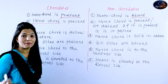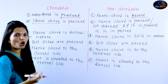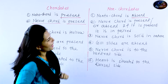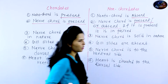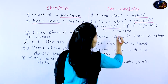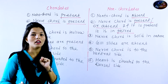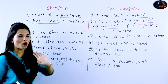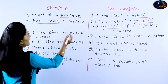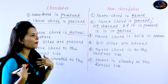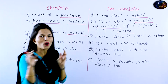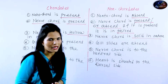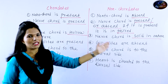The nerve cord is made up of neurons. In chordates, the nerve cord is present. In non-chordates, it is absent. In chordates, the nerve cord is hollow in nature. In non-chordates, if a nerve cord is present, it is solid in nature.